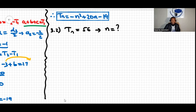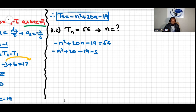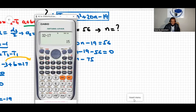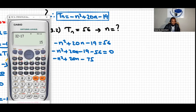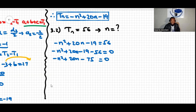I'll use the quadratic formula calculated earlier and equate it to 56: negative n² + 20n minus 19 = 56. Moving 56 over: negative n² + 20n minus 75 = 0. Let me double-check: negative 19 minus 56 = negative 75. Yes, negative n² + 20n minus 75 = 0.